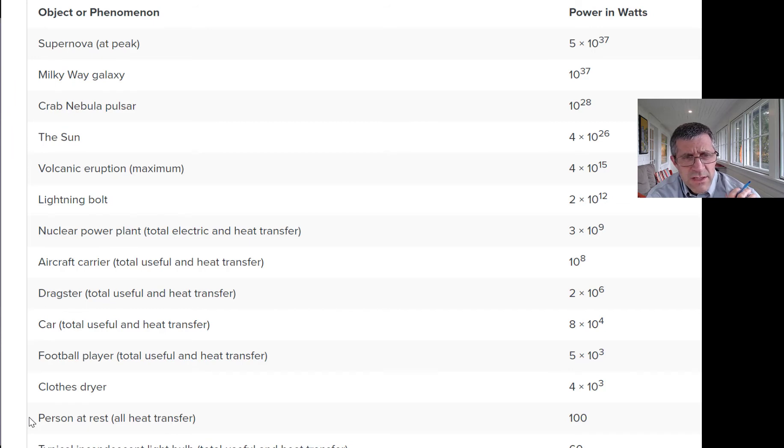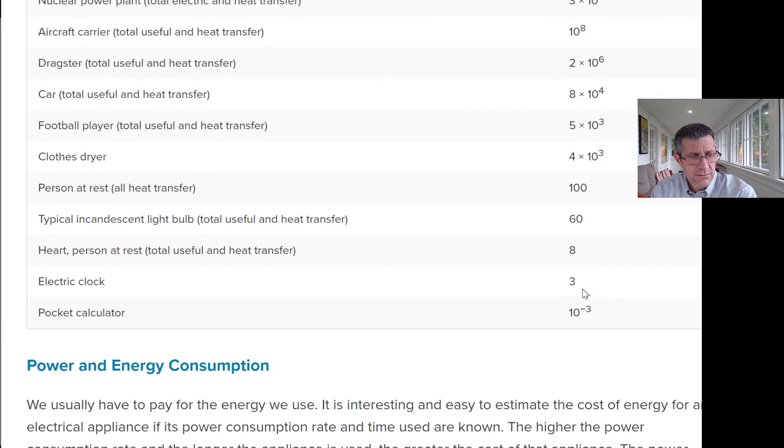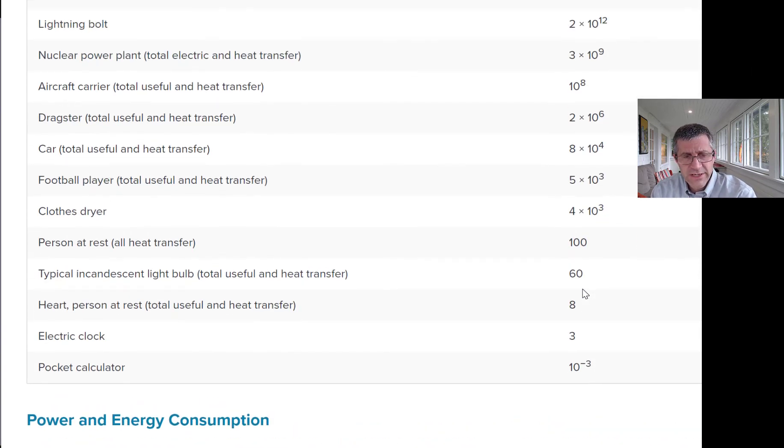The Crab Nebula pulsar gives out a very large amount of energy, 10 to the 28 watts or joules per second. If you go down, like a car, you can put out eight times 10 to the fourth - that's 80,000 watts or 80,000 joules per second. Your pocket calculator is putting out 10 to the minus three, so a fraction of a watt.